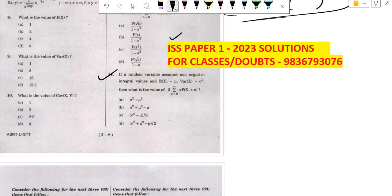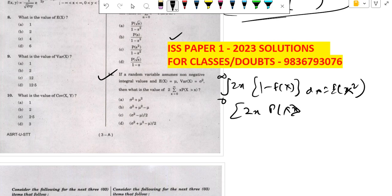In this way, 0 to infinity 2x(1 - F(x))dx equals E(x²). So summation of 2x times E(x greater than x) is E(x²). This is sigma² plus mu², so the answer is A.